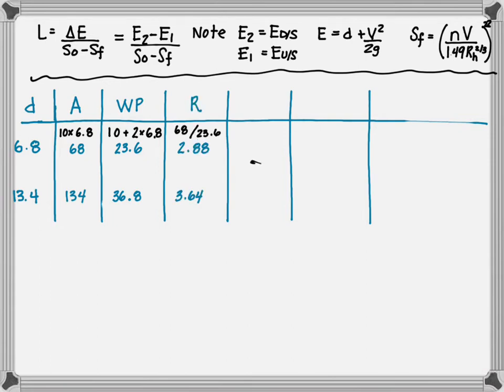Next, we find the hydraulic radius. The hydraulic radius is the area divided by the wetted perimeter. So 68 divided by 23.6 gives us 2.88 and 3.64. Next, the velocity is the flow rate divided by the area. A thousand cubic feet per second divided by 68 square feet gives us 14.7 feet per second and 7.46 feet per second.